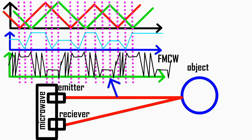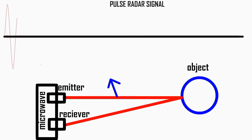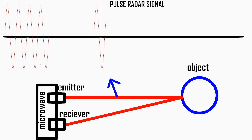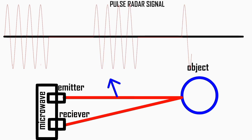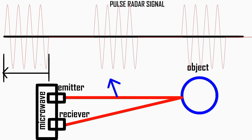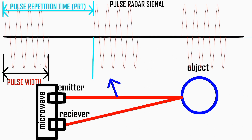Pulse radar sensors emit short bursts of microwave energy and measure the time it takes for the signal to return. These sensors are commonly used in security systems to detect the presence of intruders, or in automotive applications to avoid collisions.